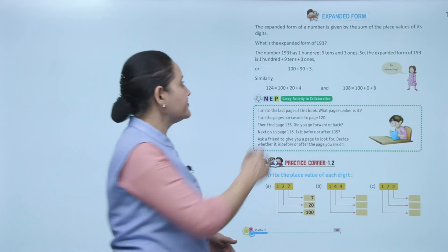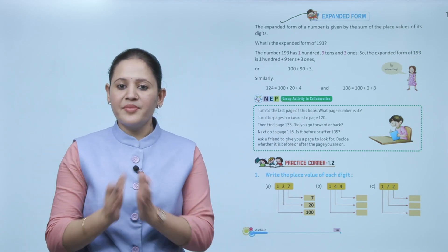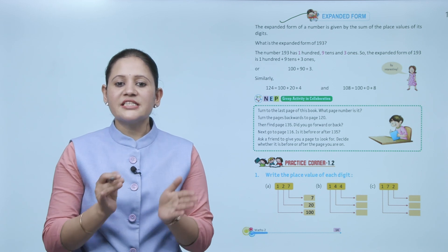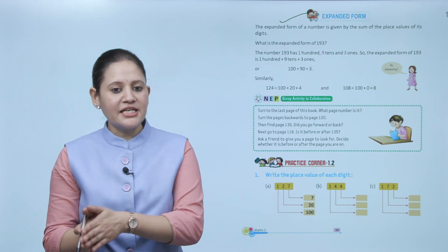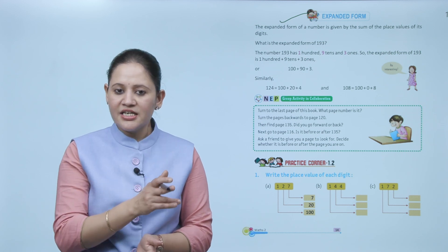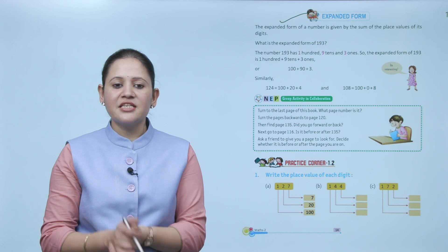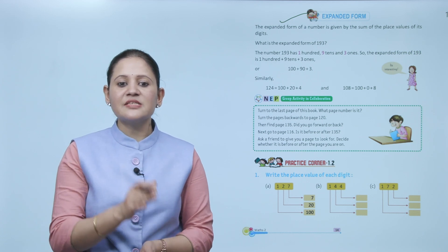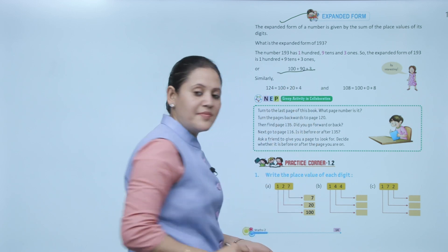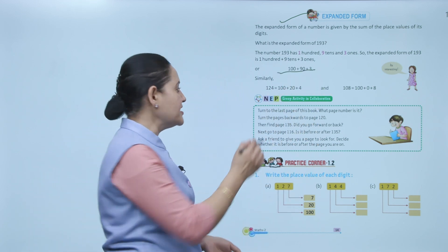Next: expanded form. The expanded form of a number is given by the sum of the place values of its digits. What is the expanded form of 193? The number 193 has 1 hundred, 9 tens, and 3 ones, so the expanded form is 100 plus 9 tens plus 3 ones, or we can write 100 plus 90 plus 3. Similarly, for 124: 100 plus 20 plus 4.